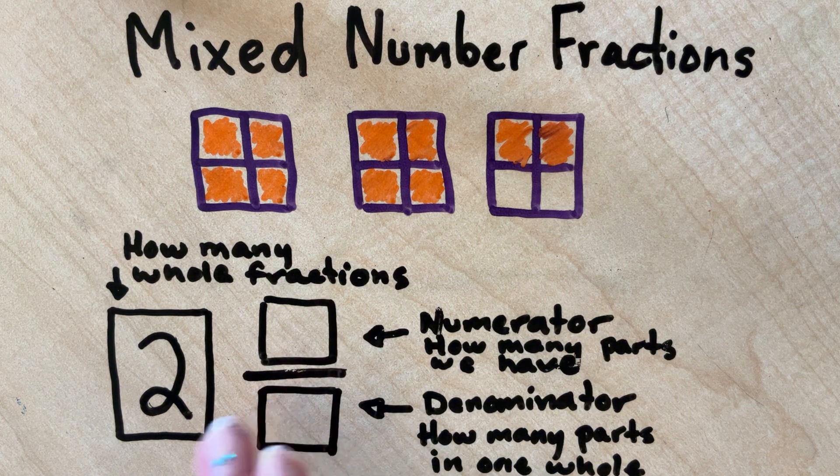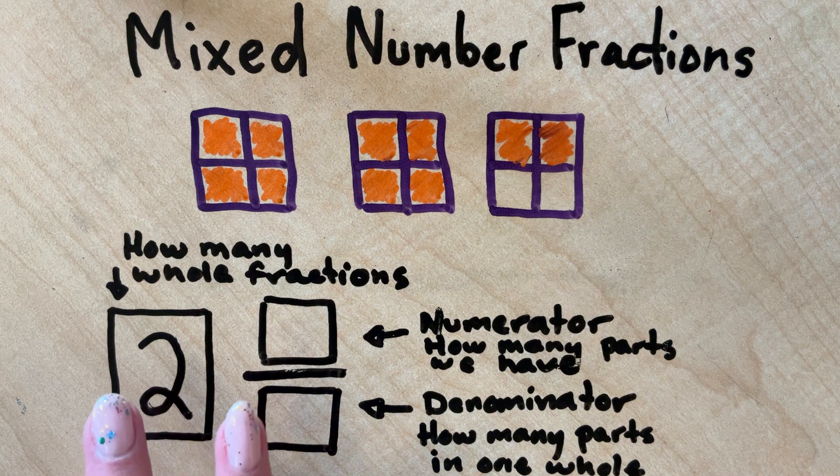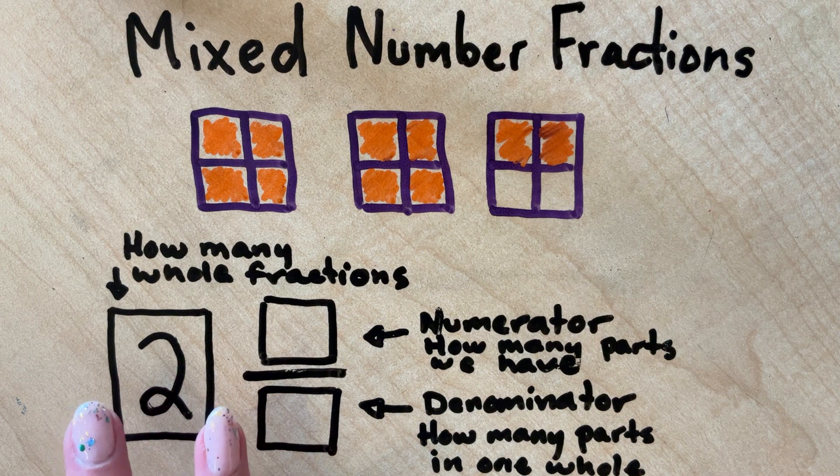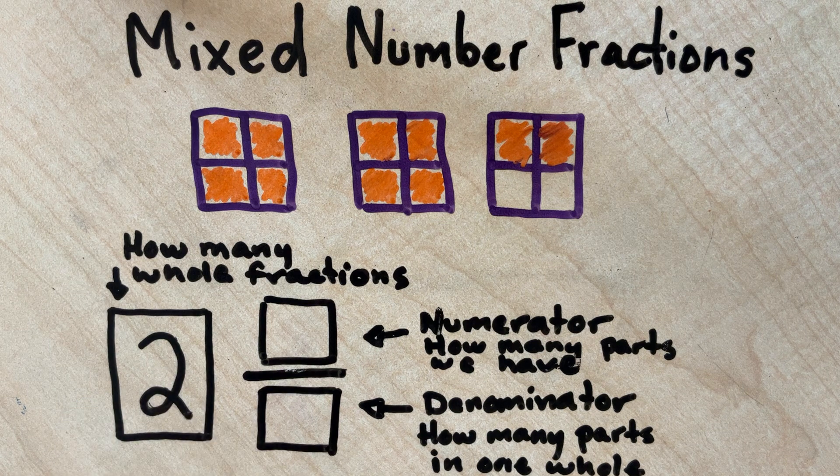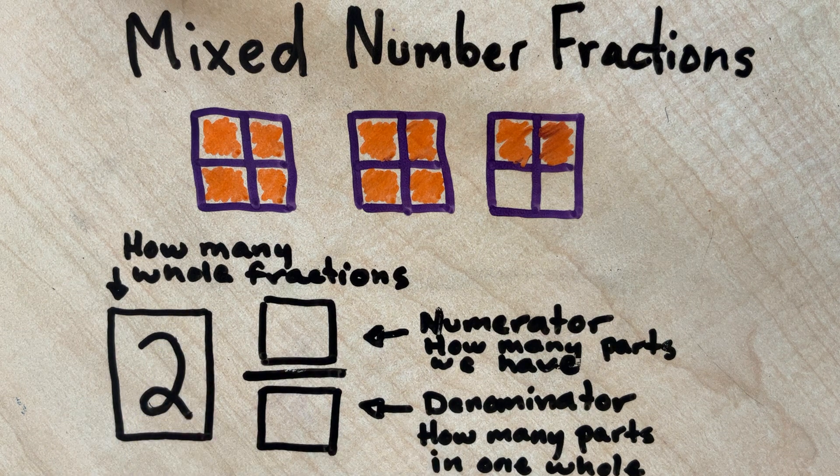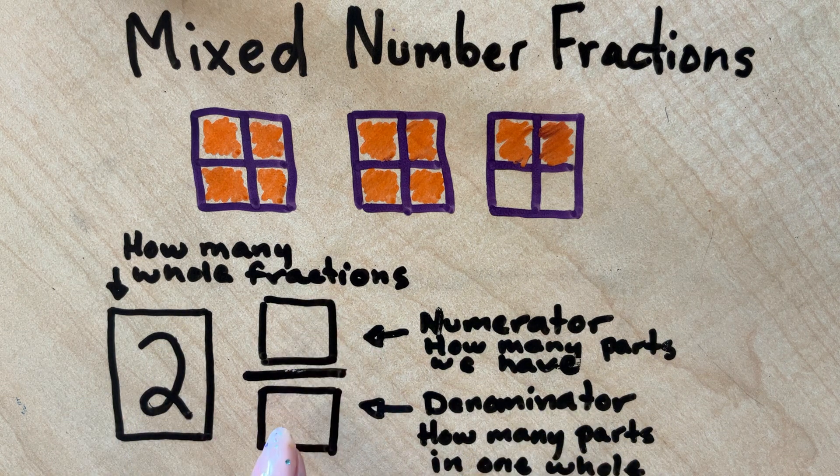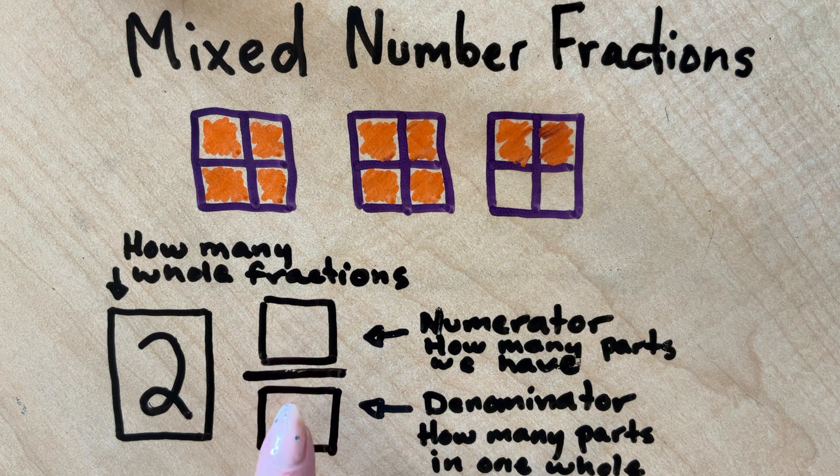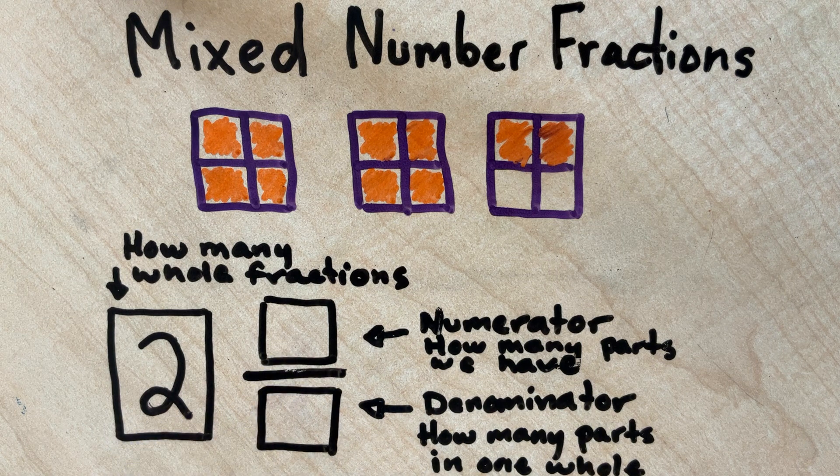That's pretty important because when this two is this big, it tells us that it's a whole number. We know that just by seeing the size. Then we know that the fraction next to it tells us how many more pieces connected to this two whole we have.